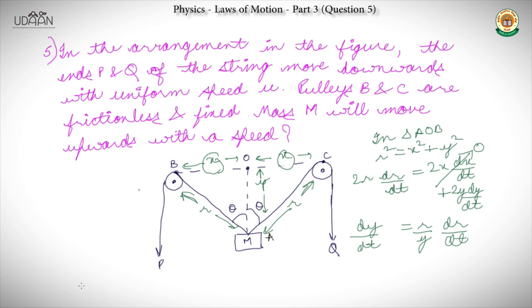We have been given that the value of dr/dt is U — that is the rate at which the string is moving, and we have been told it is U.